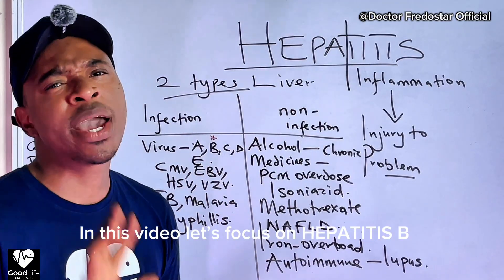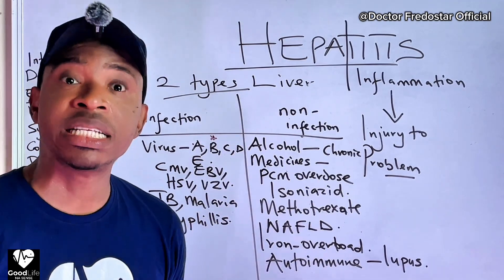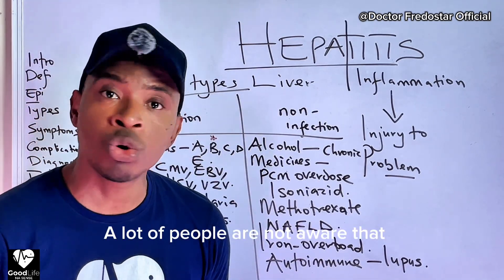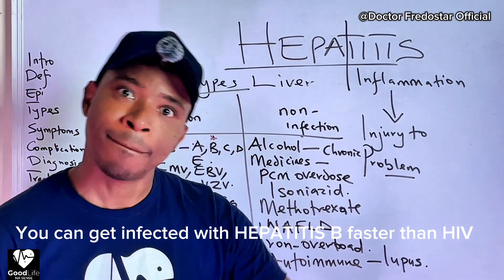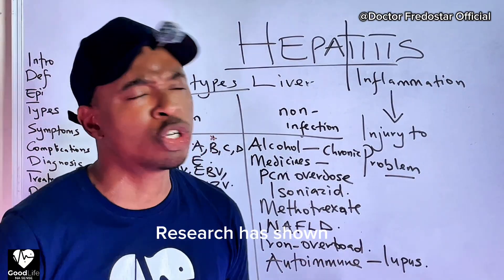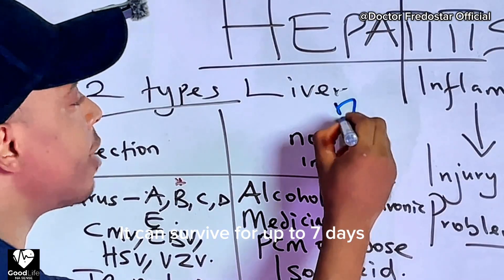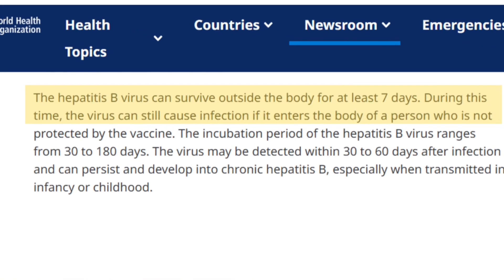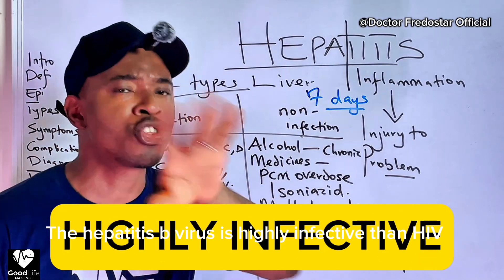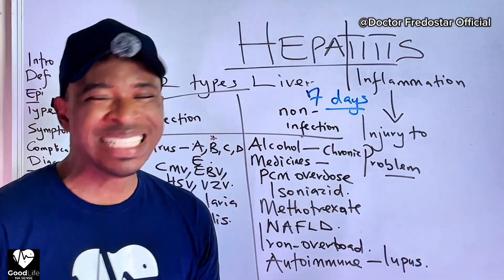Now in this video, let us talk about hepatitis B. Hepatitis B and HIV — people don't know that hepatitis B, if it enters your body, spreads faster than HIV. Some research has shown that if you put hepatitis B on a surface, it can stay there for seven days and still be alive. If it enters your body, it is highly infective — much more than HIV.